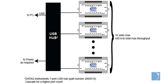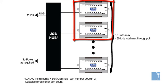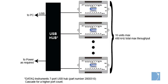That all changes with the introduction of the DI2108P. In this example, we have two DI2108Ps connected to a powered USB hub and plugged into a PC. You can connect up to 16 units, with throughput sample rates up to 480 kHz.